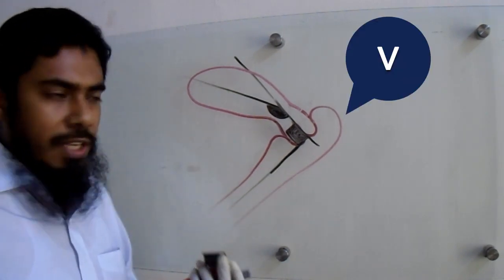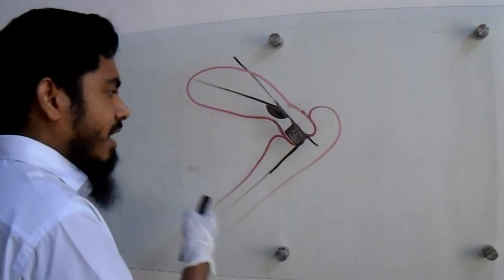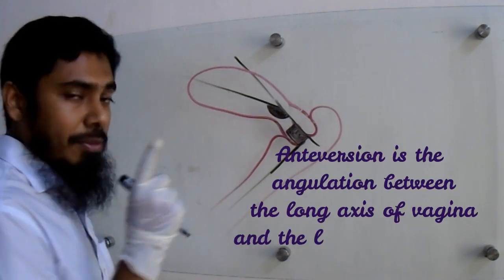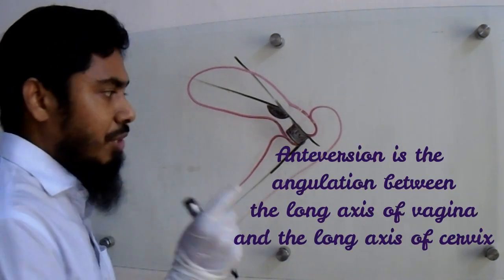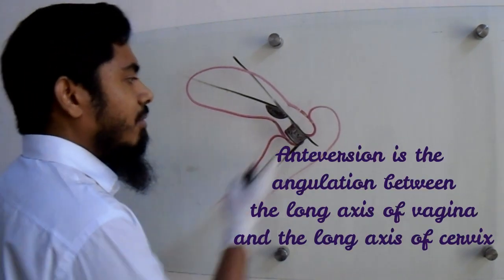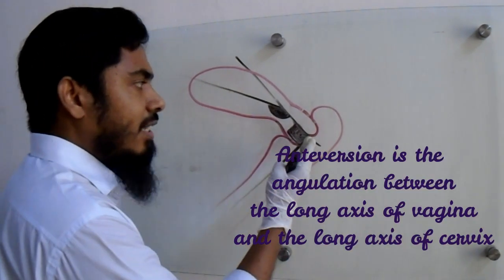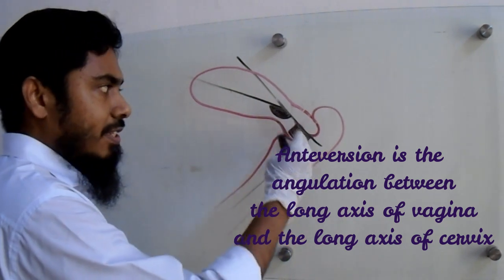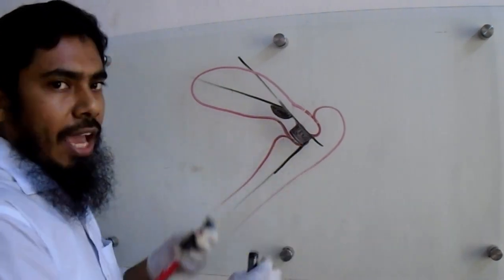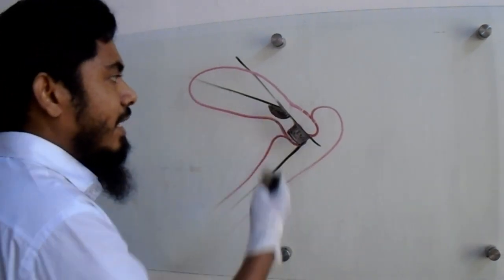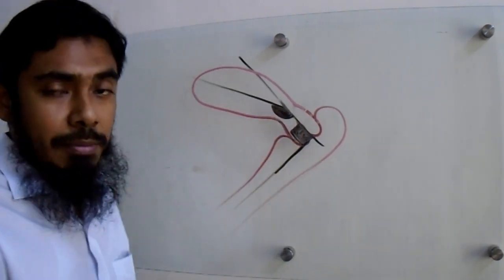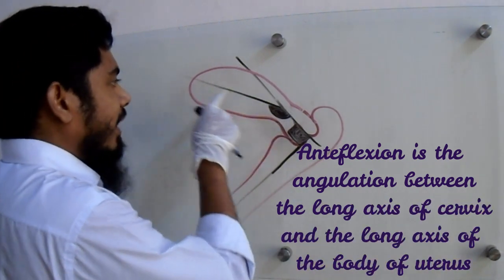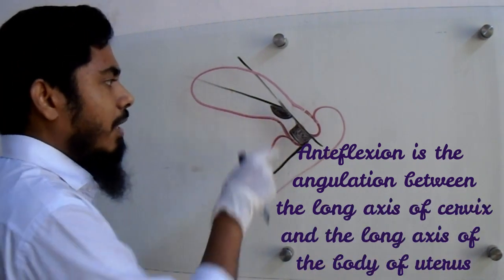How will you remember it? Version starts with the letter V and vagina starts with the letter V, so anteversion is definitely the angle between the long axis of the vagina and the long axis of its nearer structure, that is the cervix. Anteflexion is between the long axis of the cervix and the long axis of the body of the uterus.